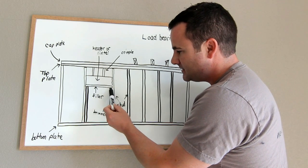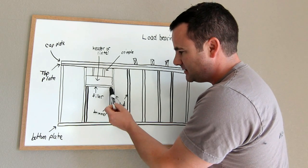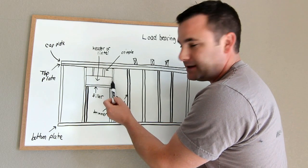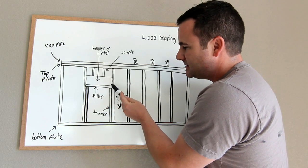Then the filler sits on top of the trimmers. And then your lintel or your header sits on top of those.